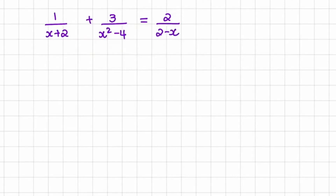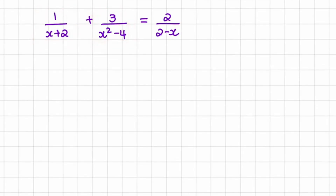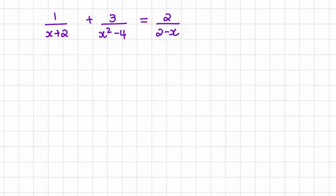Here we have three terms: 1 over x plus 2, 3 over x squared minus 4, and on the right-hand side, 2 over 2 minus x. As explained in the previous video, the first thing you want to do is find the lowest common denominator.